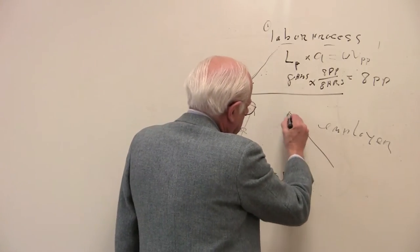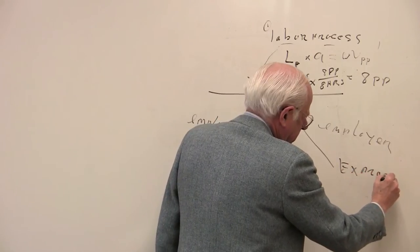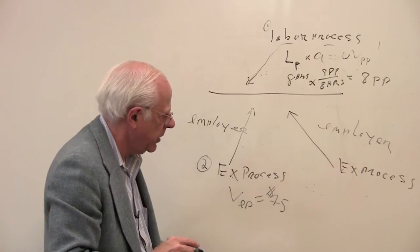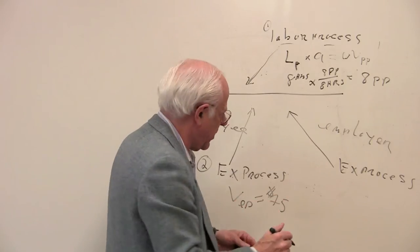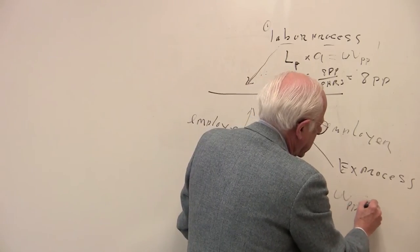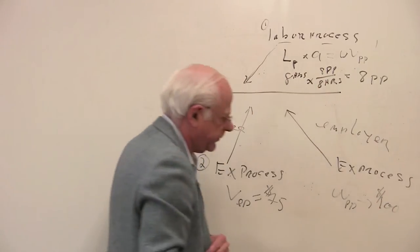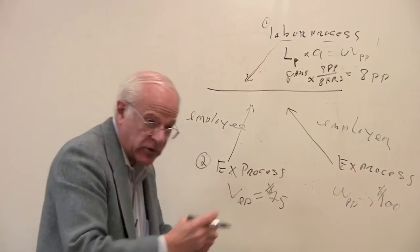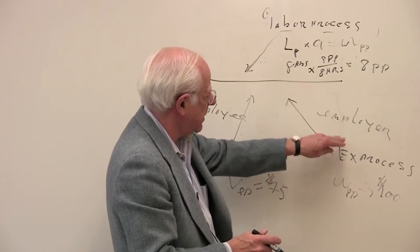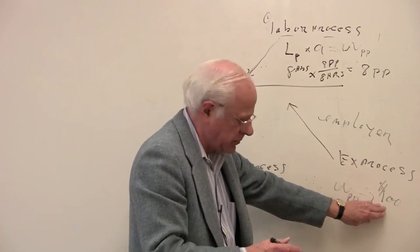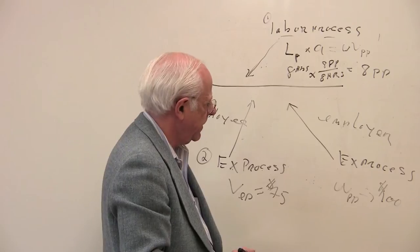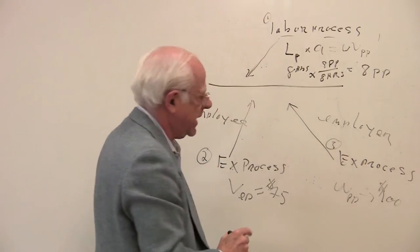Suppose there's another exchange process. Notice this exchange process is on the input side. Labor power is an input to the employer. But the employer also engages in another exchange process, which is selling police protection on the market. And suppose that use value, that police protection, is sold for $100. To whoever is going to be the buyer who gets the use value of the police protection. And so the policing is sold, that is, police protection is sold by this employer, by this firm. And the firm realizes, or the employer realizes, $100 of value. And that's the one, two, that's the third economic process.